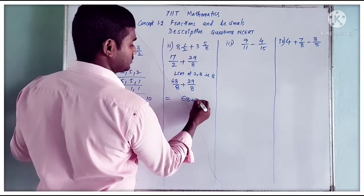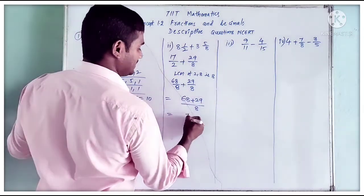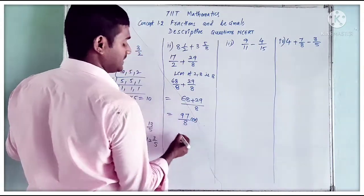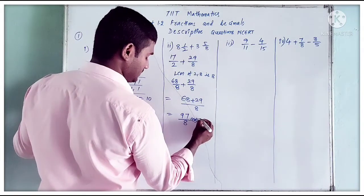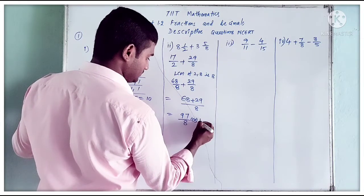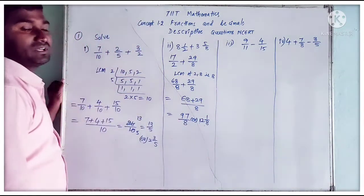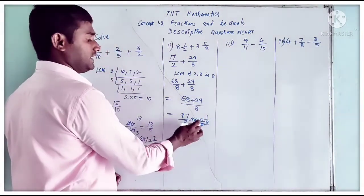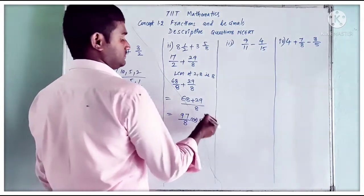So 68 by 8 plus 29 by 8. We can now add: 68 plus 29 by 8, which equals 97 by 8. Or if you want to write in mixed fraction, you can write 12 and 1 by 8.